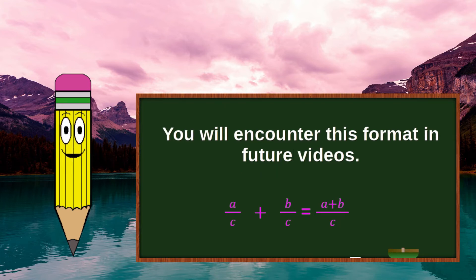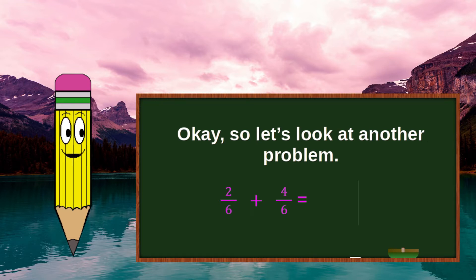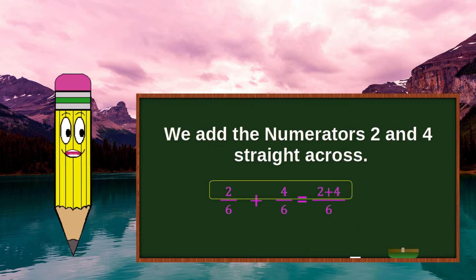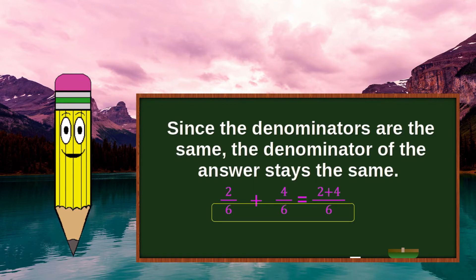Okay, so let's look at another problem: 2 over 6 plus 4 over 6. We add the numerators 2 and 4 straight across. Since the denominators are the same, the denominator of the answer stays the same.